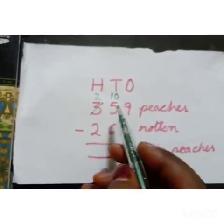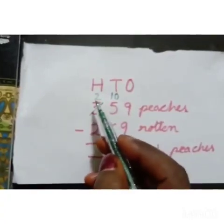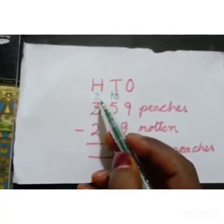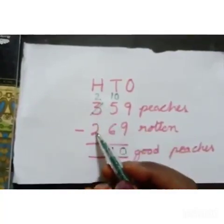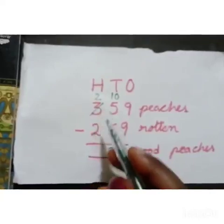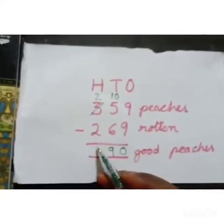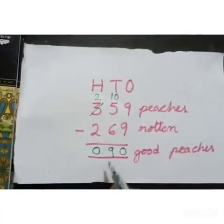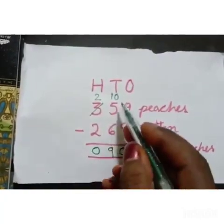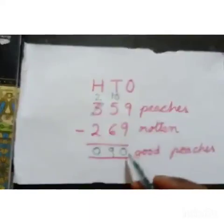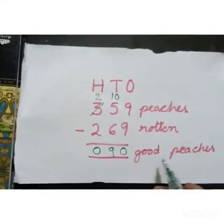Come to the hundreds place. The number there is 2. So 2 minus 2 equals 0. In the hundreds place: 0. Tens place: 9. Ones place: 0. So the answer is 90. There are 90 good peaches left in the box.